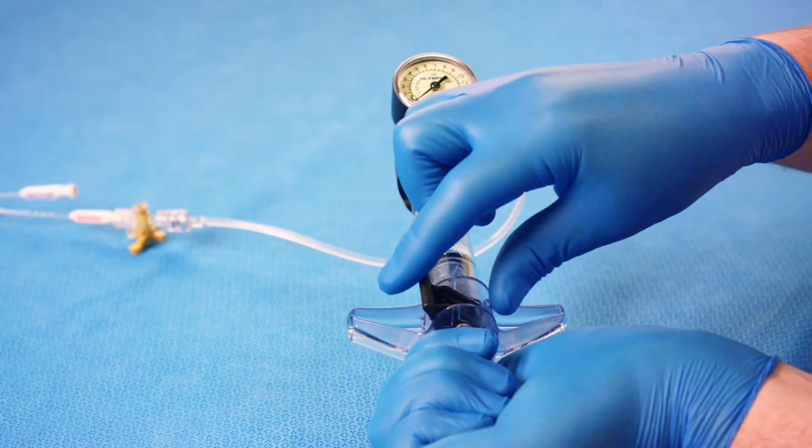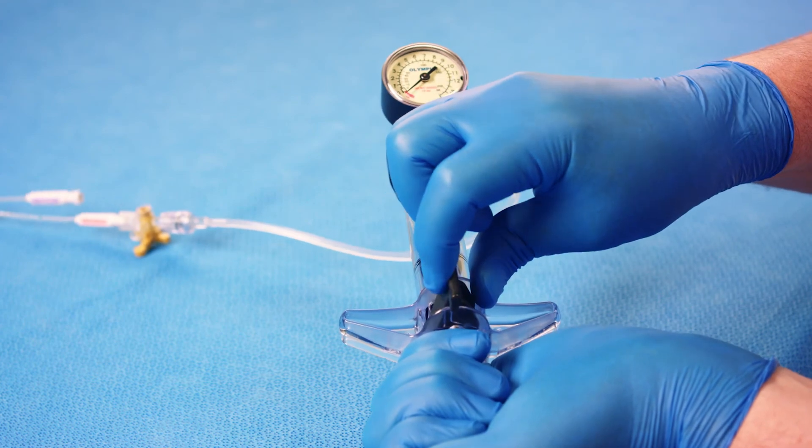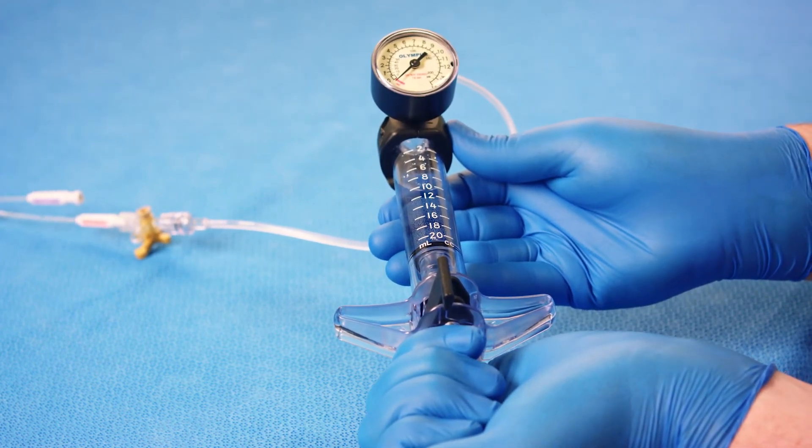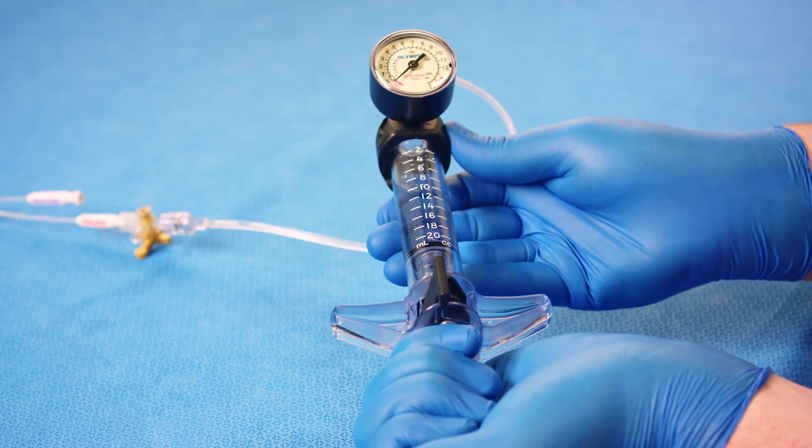With your free hand, turn the locking switch back into the center position. This will lock the plunger in place and keep the balloon in continuous vacuum.